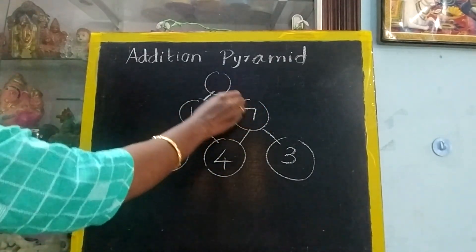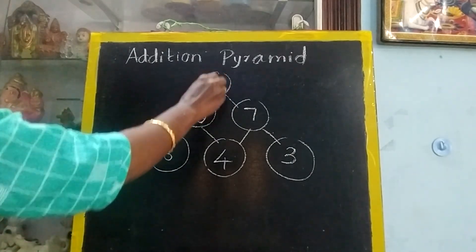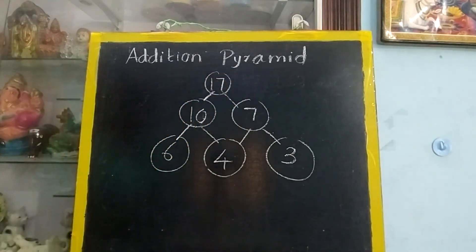Now, for this circle 10 plus 7, 17. So this is called addition pyramid. You should only draw and try it.